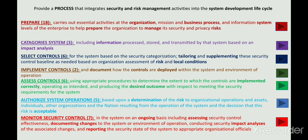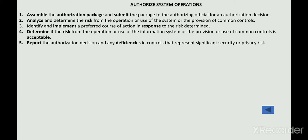In the Authorization step, you assemble the authorization package and submit it to management for an official decision. You analyze the risks from the operations of the system — what risks are caused if the system goes online — then implement a response based on that risk assessment, determine whether these risks are acceptable to the organization, and report any deficiencies in the controls.